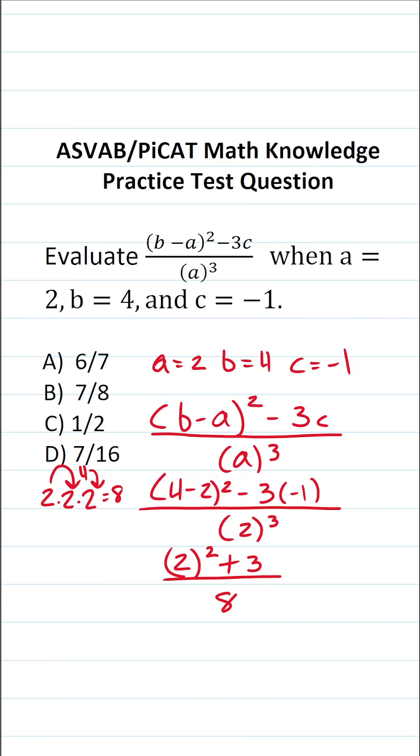Let's keep working this out. 2 squared is 2 times 2, which is 4 plus 3 over 8. 4 plus 3 is 7, so this is going to be 7 over 8.